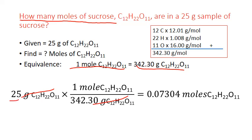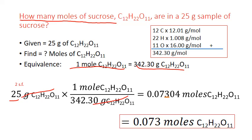To round to an appropriate decimal place, we look back at our initial measurement, 25. We have two significant figures there, which means our final answer should be rounded to two significant figures. So we round that number to 0.073 moles of sucrose.